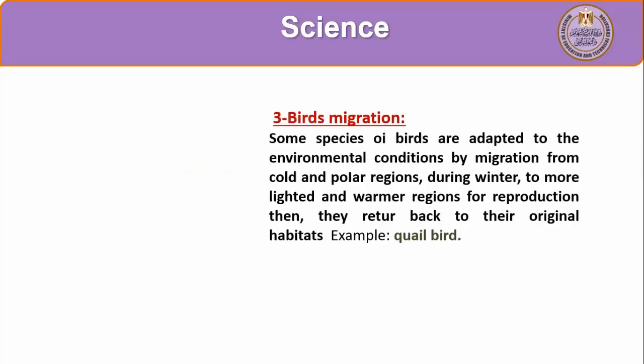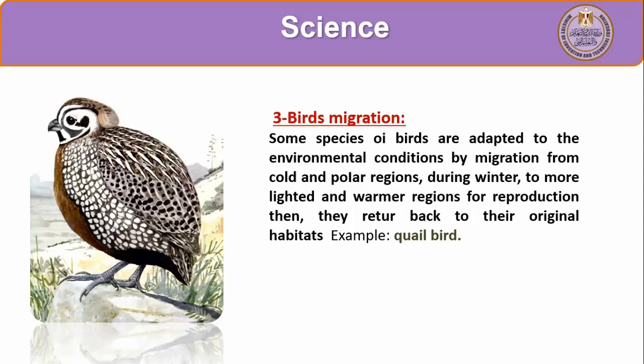The third type is bird migration. Some species of birds adapted by migrating from cold polar regions during winter to warmer regions to reproduce themselves. They then return back to their original habitats after the weather becomes warmer, like the coral bird.